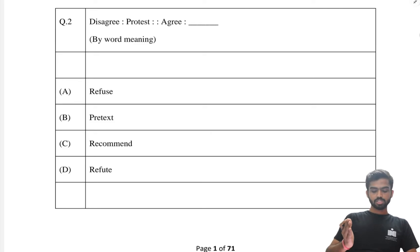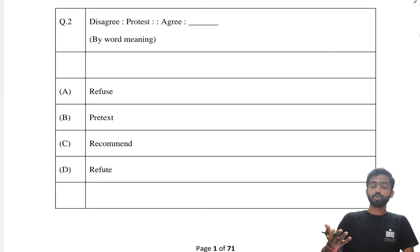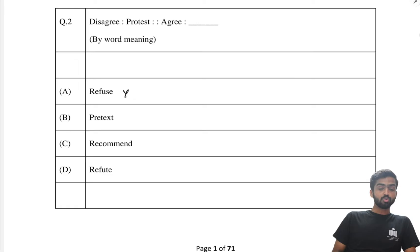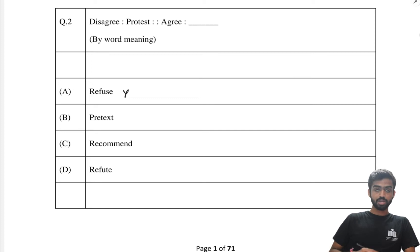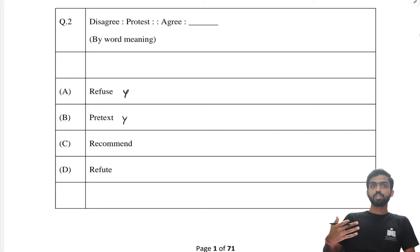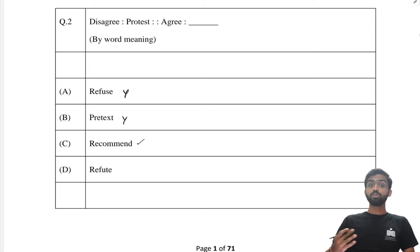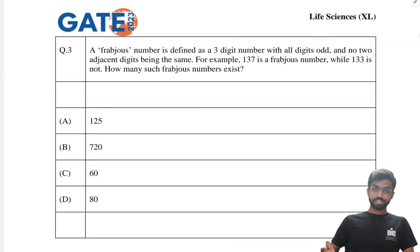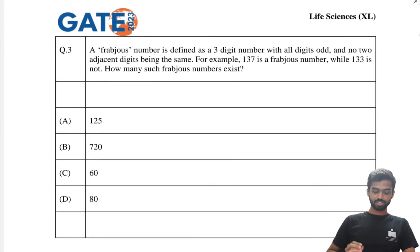The second question: 'disagree' is analogous to 'protest' — protest has a similar meaning in the context of disagreeing. To agree, you cannot refuse someone's thoughts and agree at the same time. 'Pretext' is a wrong justification. 'Recommend' is something you would do when agreeing to something. So the answer very clearly would be 'recommend.'